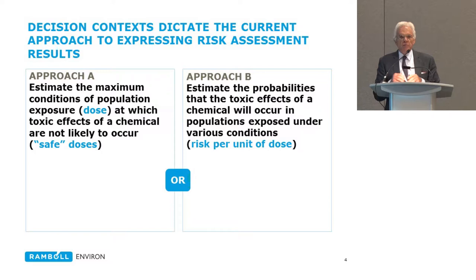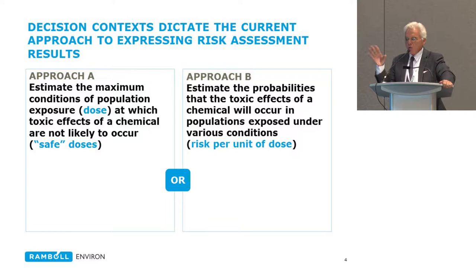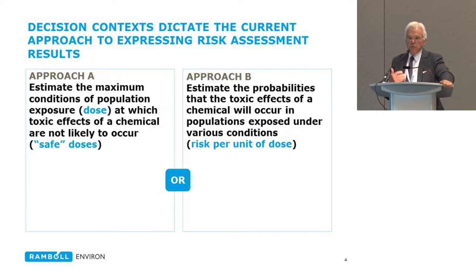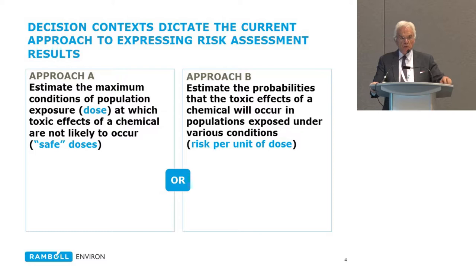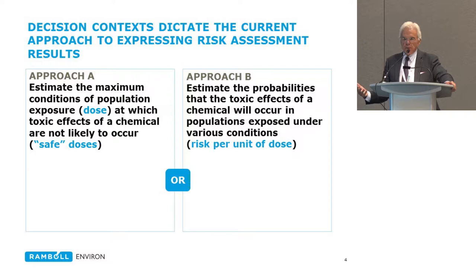Let's talk about two different decision contexts in which we express risk results. On the left, Approach A: we estimate what we think to be the maximum conditions of population exposure and the dose at which toxic effects are not likely to occur — we call that a safe dose, in quotes. Approach B is where we estimate the probabilities of toxic effects under different conditions of exposure, and how risk changes with exposure. That's a much more useful kind of model, and we should be moving in that direction.